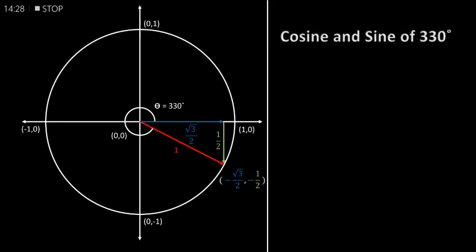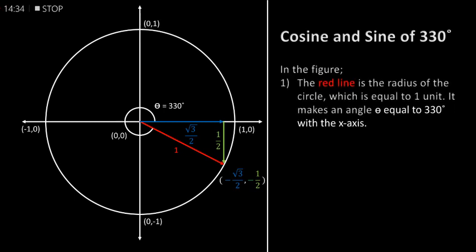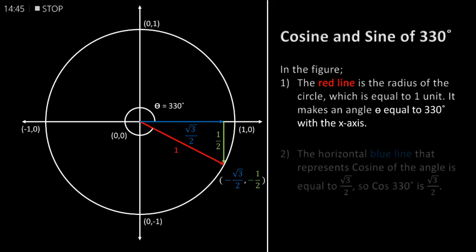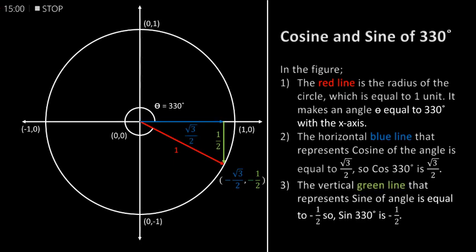Cosine and sine of 330 degrees. In the figure, the red line is the radius of the circle which is equal to 1 unit. It makes an angle theta equal to 330 degrees with the x-axis. The horizontal blue line that represents cosine of the angle is equal to half of square root of 3, so cos of 330 degrees is equal to half of square root of 3. The vertical green line that represents sine of the angle is equal to minus 1 by 2, so sin of 330 degrees is equal to minus 1 by 2.